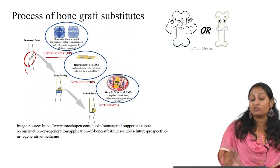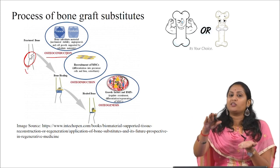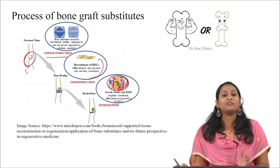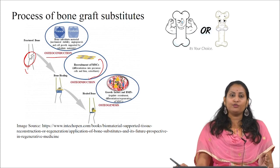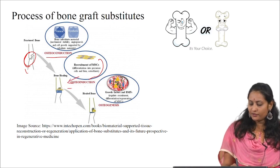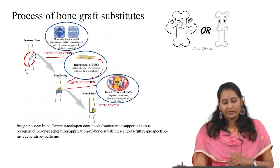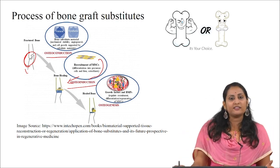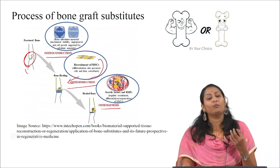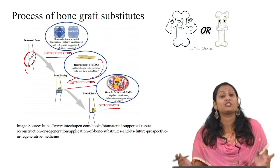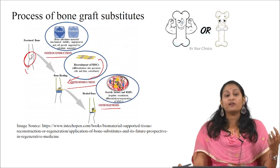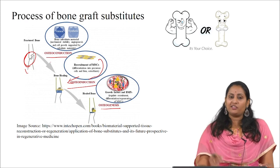Then osteoconduction — the formation of new bone on the surface — is required. After that, recruitment of mesenchymal stem cells (MSCs) takes place, which differentiate into precursor cells and then into osteoblasts. Then osteogenesis — the formation of new tissue — occurs, aided by growth factors such as bone morphogenetic proteins, which regulate, recruit, differentiate, and regenerate mesenchymal stem cells.